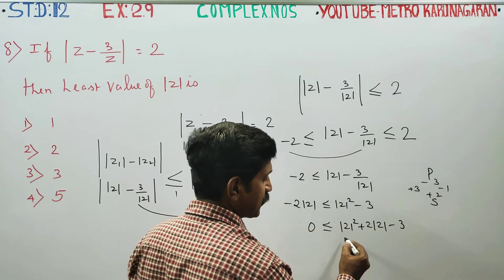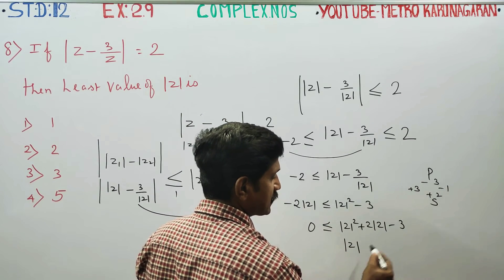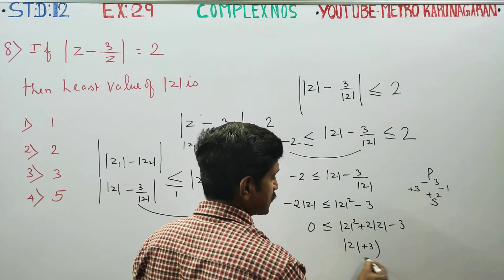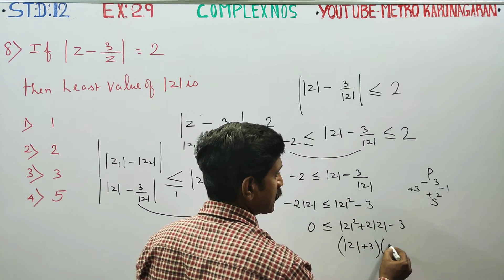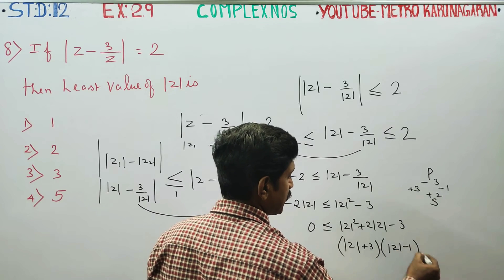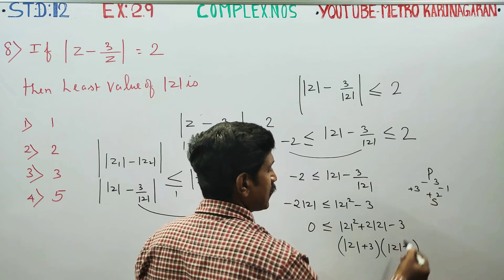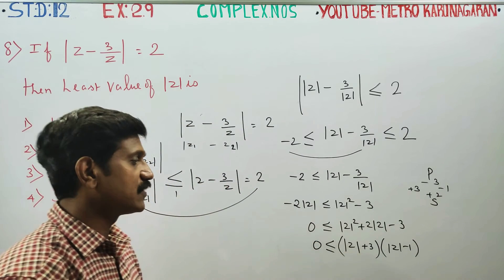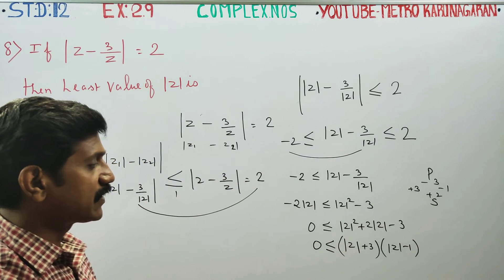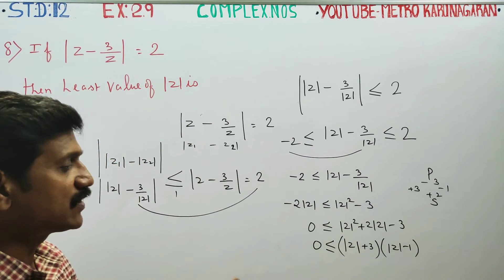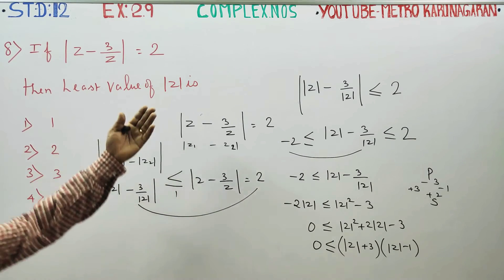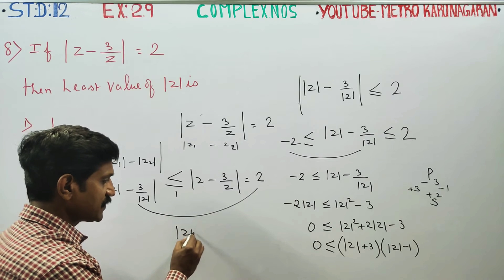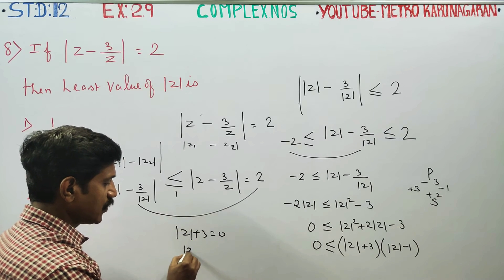Our answer is this. Is it Z minus? This is plus. Is it plus 3? Is it minus 1? This product sum is greater than or equal to 0. What is the least value of Z? Why is the value of Z?